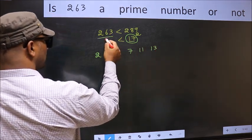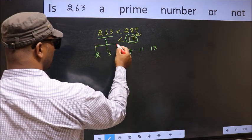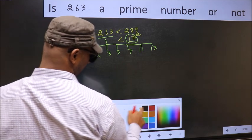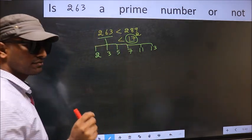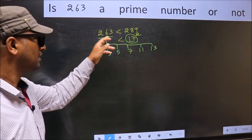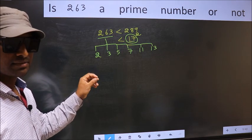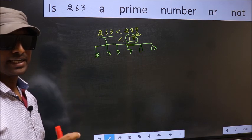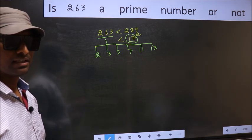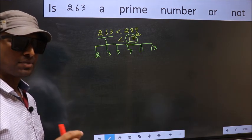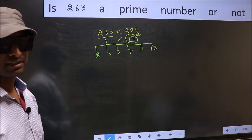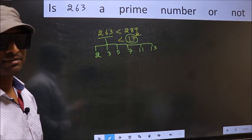Now, for the given number, we should check divisibility by all these numbers. And if the given number is divisible by any one of these numbers, we say it is not a prime number. Otherwise, it is a prime number. Did you understand the method? Now, let us check divisibility.